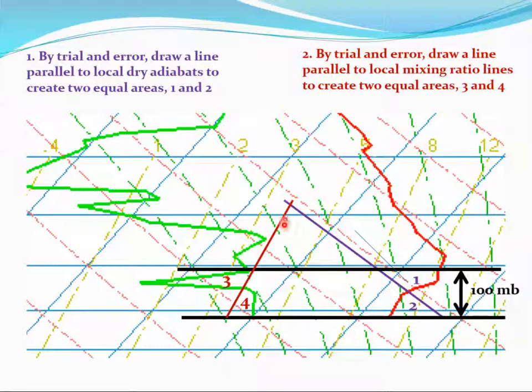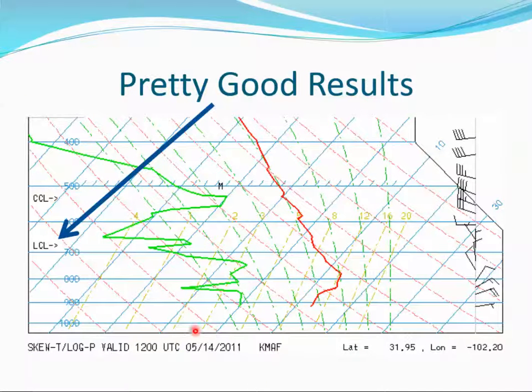Because this sounding comes from NCAR, we can actually check our work. The LCL that's labeled on these soundings is actually a mixed layer LCL, and we can see here that we got pretty good results. We had about 680 millibars from the method that we used, and the LCL that's marked on the sounding is pretty close to 680 millibars. So our estimates were good.